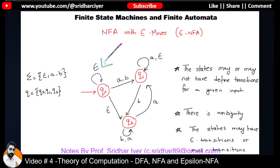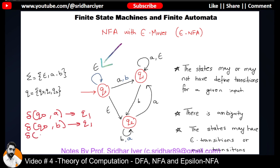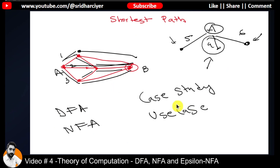Looking at the diagram: Q0 on input A goes to Q1, and Q0 on input epsilon stays in the same state. We can write: transition of Q0 on input A goes to Q1, transition of Q0 on input B goes to Q1, Q0 on epsilon goes to Q0 itself, and Q0 on epsilon goes to Q2. Applying the shortest path concept, the NFA will decide which transition is most beneficial.